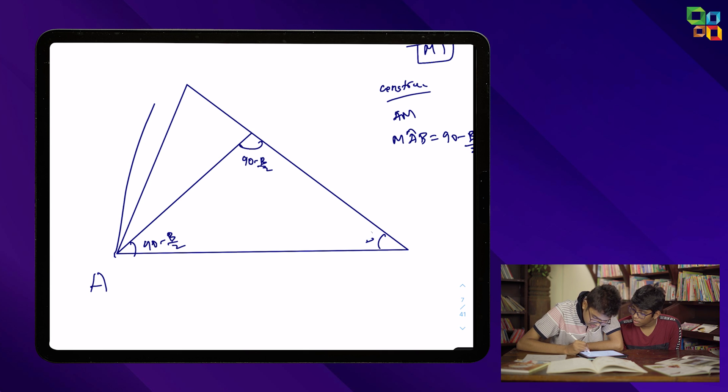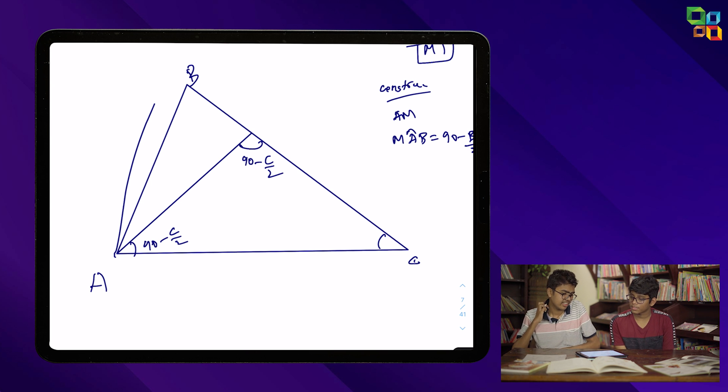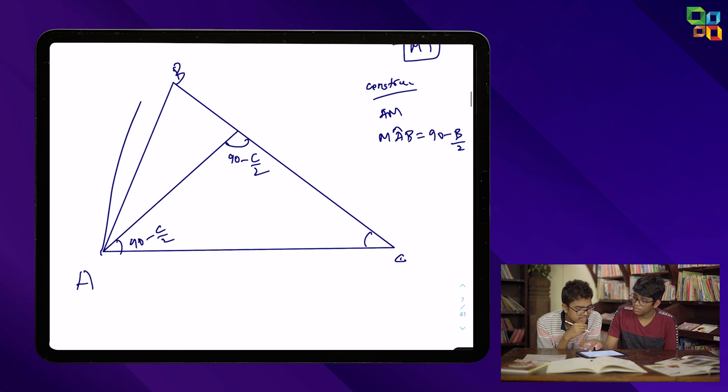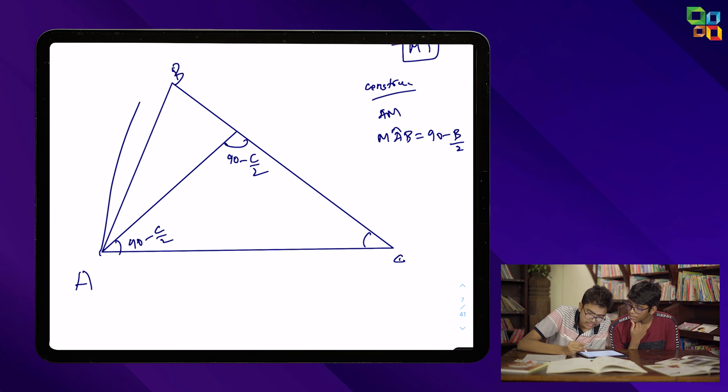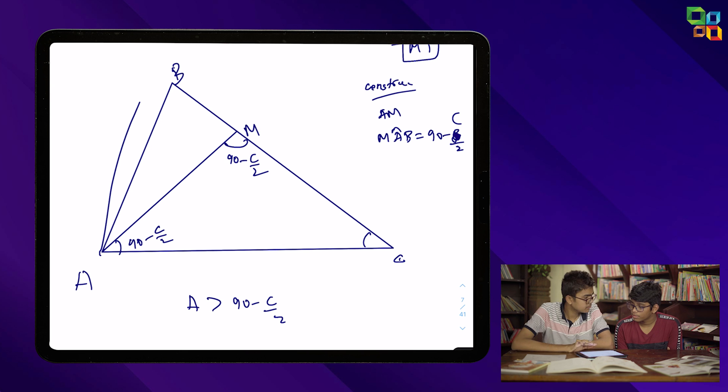I think I did something wrong. One second. Let's call this B. You know something will go wrong. Okay, you want to construct in such a way that... It will be helpful later. 90 minus C by 2 here. So this AM will lie inside the triangle only if A is greater than 90 minus C by 2. Correct. Which is not apparent. We need to prove this.